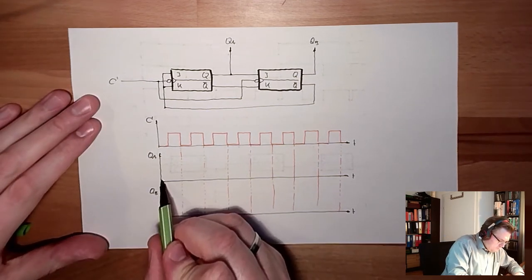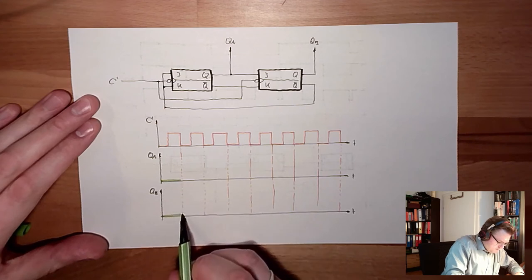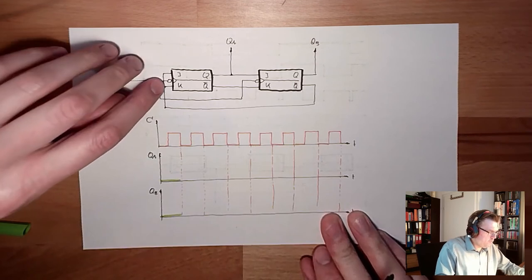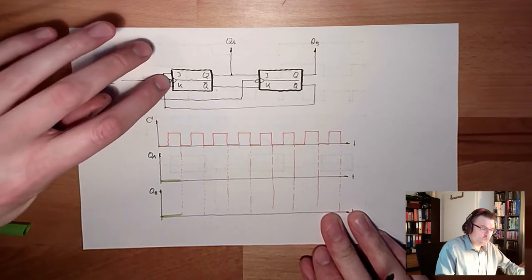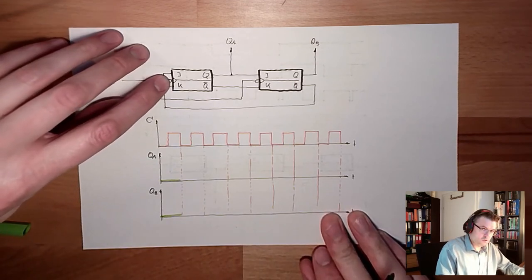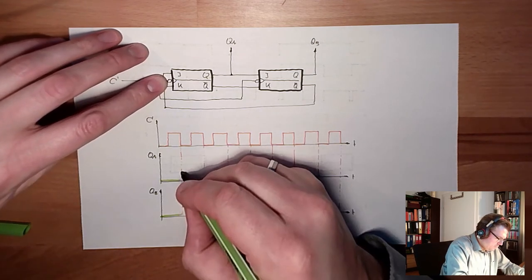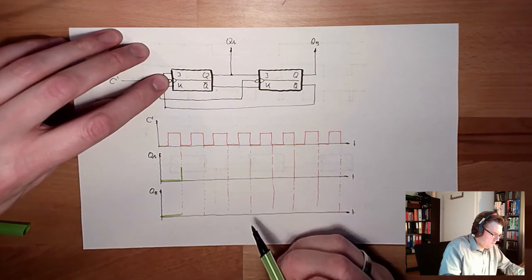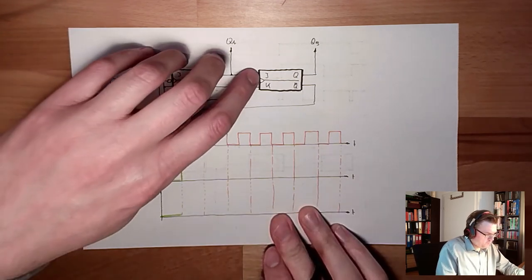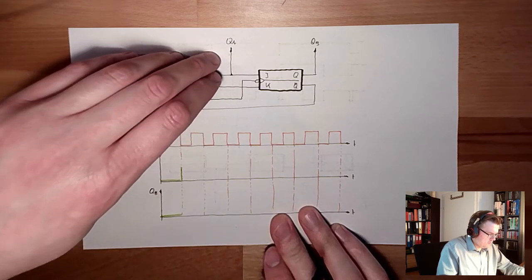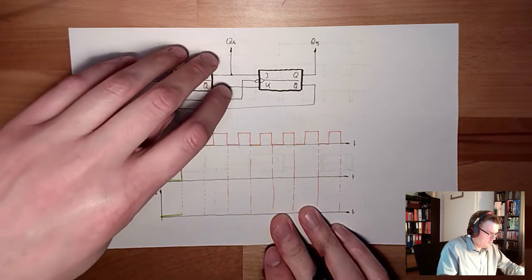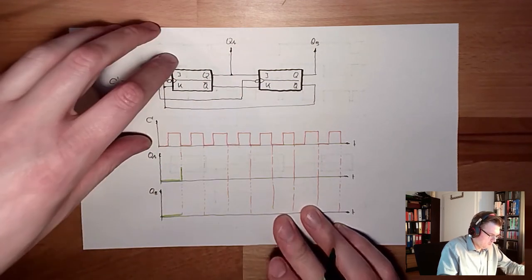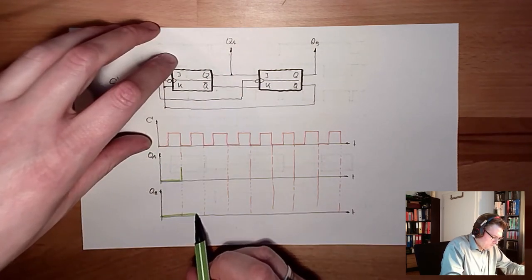Both things are zero. So, QA is zero. QB is zero. Now, because QB is zero, this is one. And this will toggle. This will toggle. So, this will change to high. Here, the output was zero, one. So, we will stay at zero, one. Zero, one. We will stay at zero, one. We will stay down there.